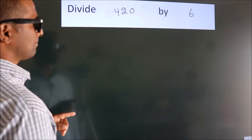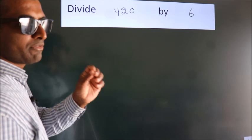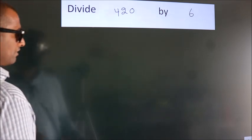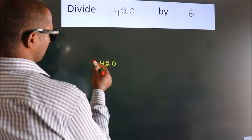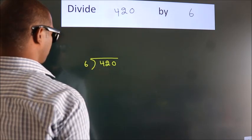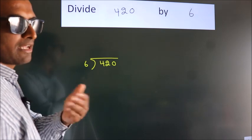Divide 420 by 6. To do this division, we should frame it in this way. 420 here, 6 here. This is your step 1. Next,